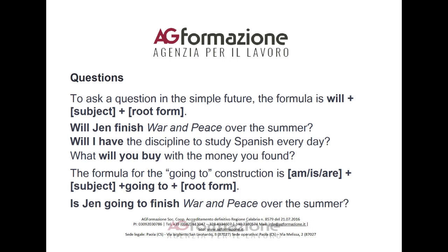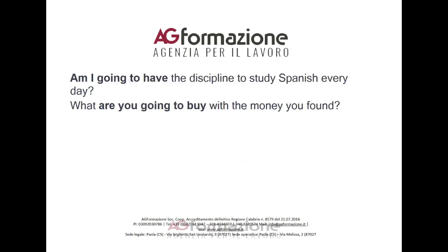Questions: To ask a question in the simple future, the formula is 'will' plus subject plus root form. Will Jen finish War and Peace over the summer? Will I have the discipline to study Spanish every day? What will you buy with the money you found? The formula for the 'going to' construction is am/is/are plus subject plus 'going to' plus root form. Is Jen going to finish War and Peace over the summer? Am I going to have the discipline to study Spanish every day? What are you going to buy with the money you found?